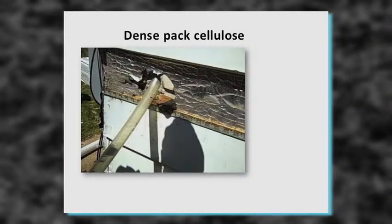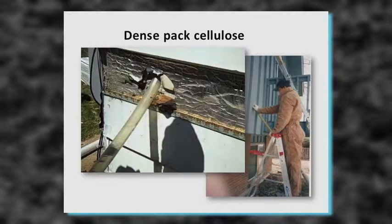Here are examples of how dense pack cellulose gets installed from the exterior. Technicians have taken off siding, drilled holes, inserted a hose, and dense-packed insulation through that hose. If a homeowner has no wall insulation but plans to put on new siding, advise them to pull the old siding down, have insulation installers dense-pack the walls, then put new siding up. You can also add foam board along the outside before siding to reach almost R-19.